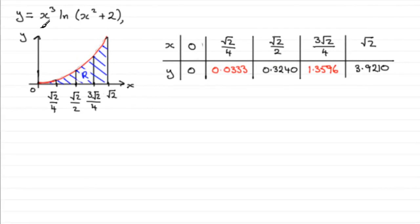Now for this question we're given that y equals x cubed multiplied by the natural log of x squared plus 2, where x is greater than 0.